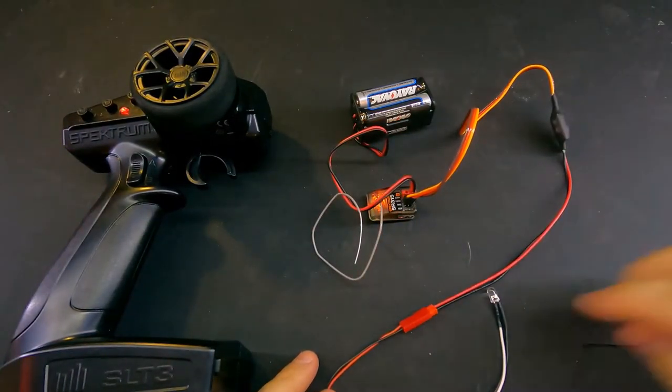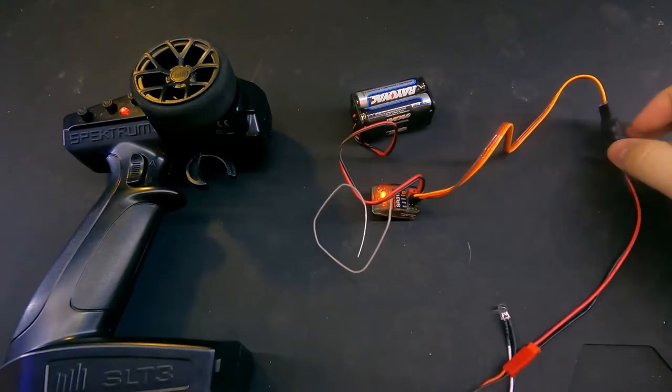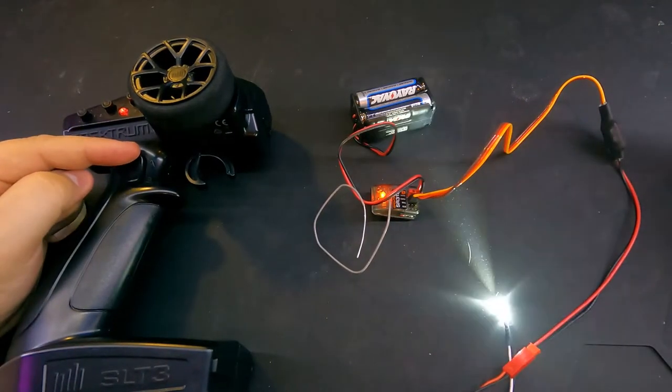Now, you'll notice that the light does not just come on at this point. Once we give this radio function, now our light kit is operating.